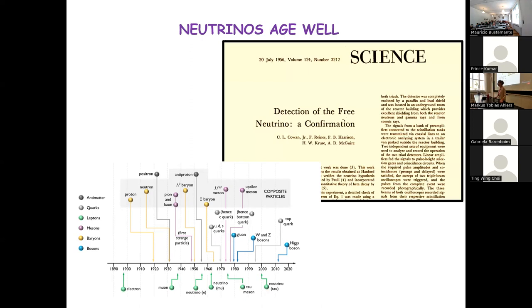Neutrinos were the third elementary particle to be discovered — before the quarks. They just keep delivering interesting results, which is why they keep attracting people. Thank you.